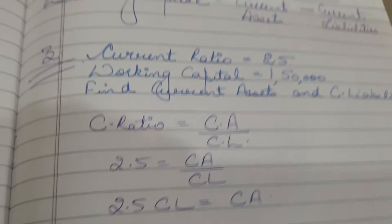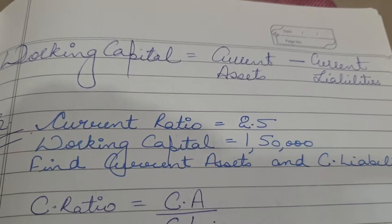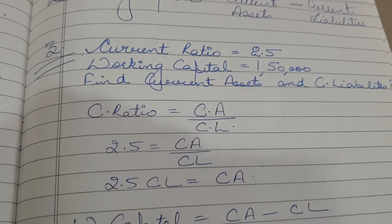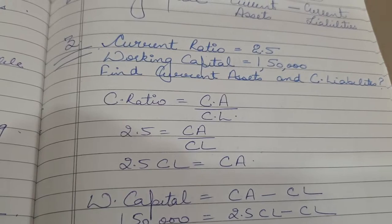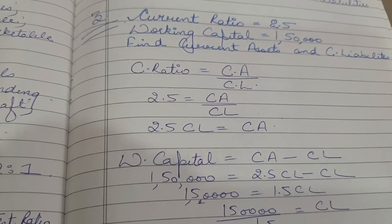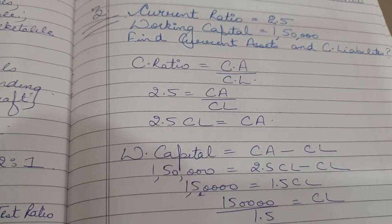Question number 3: current ratio is given as 2.5, working capital is given as Rs. 1,50,000. Find the current assets and current liabilities. Current ratio equals current assets upon current liabilities, so 2.5 = CA / CL, which gives us 2.5 CL = CA. We'll put this into the working capital formula: working capital equals current assets minus current liabilities. Working capital is given as 1,50,000.